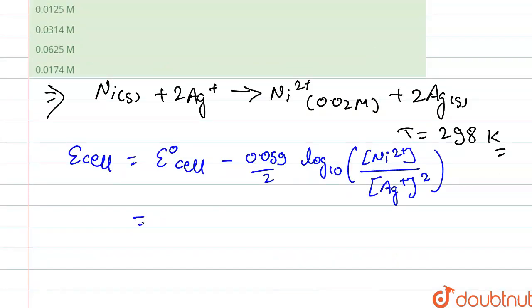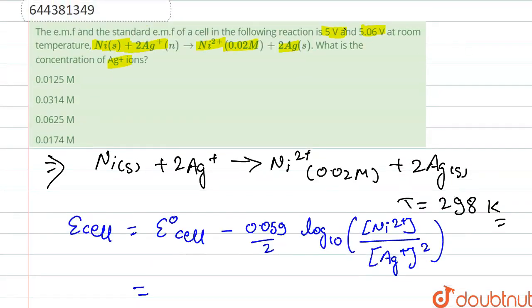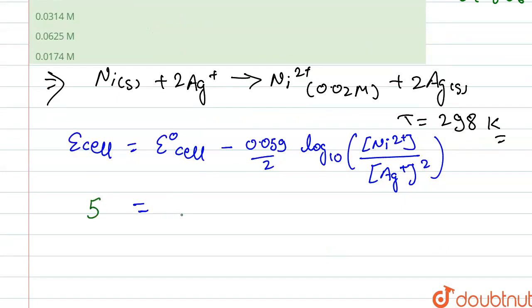Putting the values here, E cell is given as 5, E naught cell is 5.06. So 5 equals 5.06 minus 0.059 times 1 upon 2 log base 10 of concentration of Ni2+ which is 0.02 M upon concentration of Ag+ whole square.